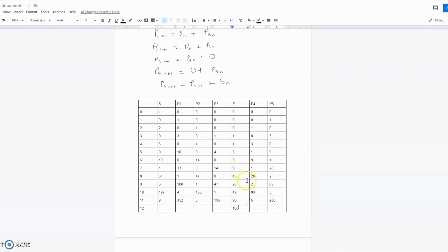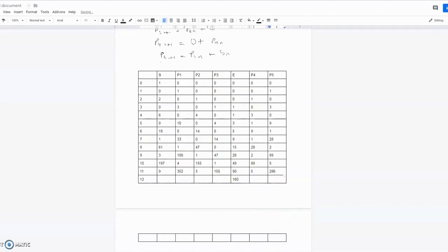Adding these values up, we have 1 + 1 + 3 + 5 + 9 + 15 + 28 + 49 + 90 + 160. So this is 2, 5, 10, 19, 34, 62, 111, 201, and 201 + 160 = 361. So the sum of E from 0 to 12 equals 361.